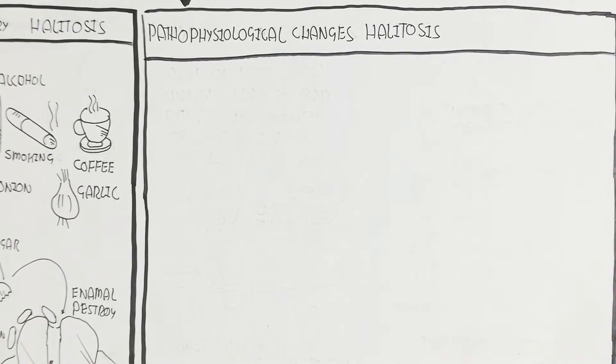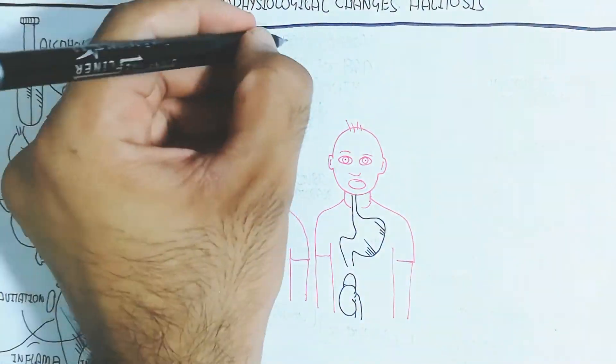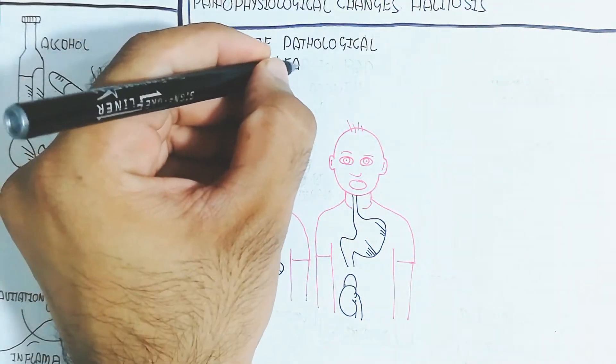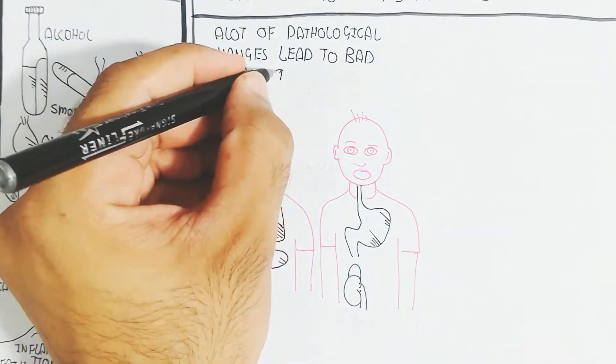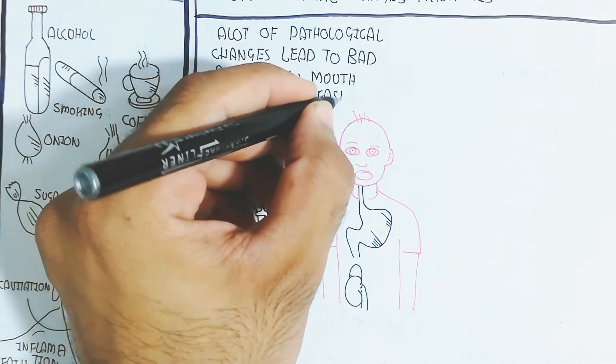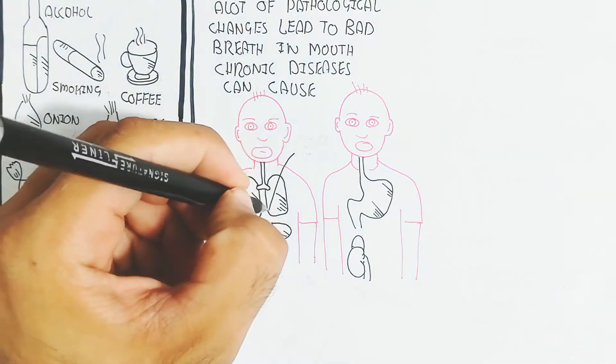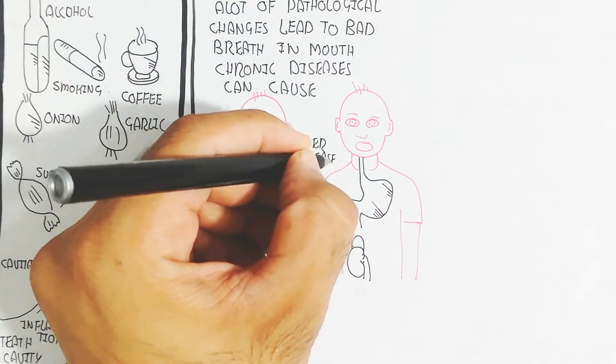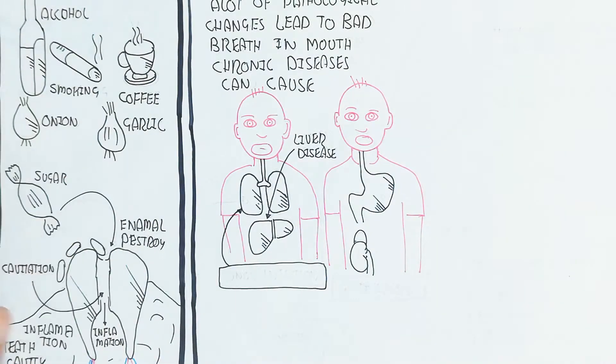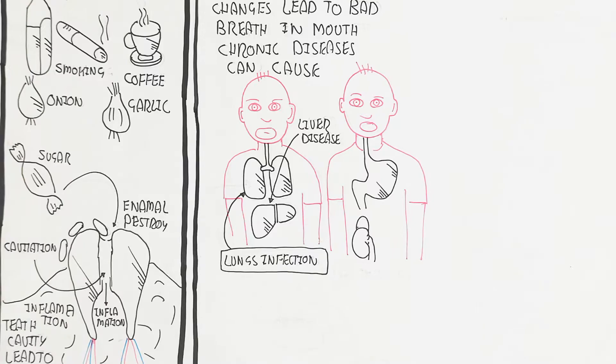Let us understand the pathophysiological changes in halitosis. A lot of pathological changes lead to bad breath in the mouth. Chronic disease can also cause it, like diabetes and other problems. It depends on liver disease producing overproduction of ketones. Lung infection when breathing out can cause smell.